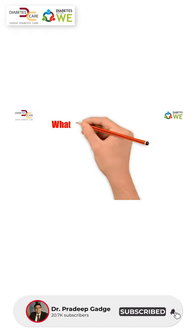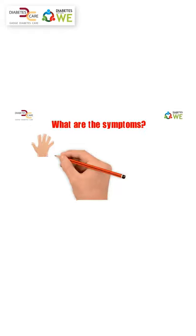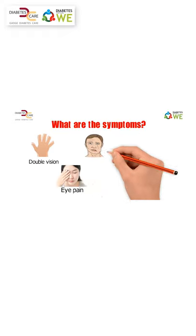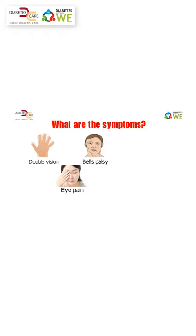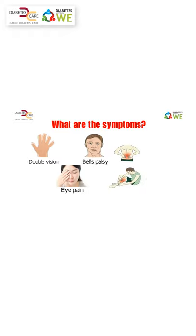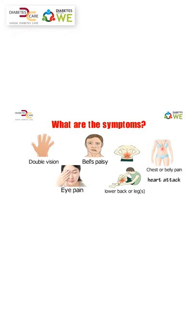What are the symptoms? Double vision, eye pain, paralysis on one side of the face, Bell's palsy, severe pain in a certain area such as the lower back or legs, and chest or belly pain that is sometimes mistaken for another condition such as a heart attack or appendicitis.